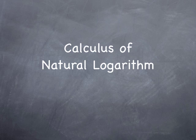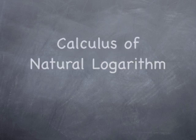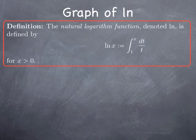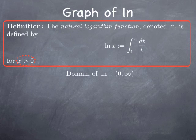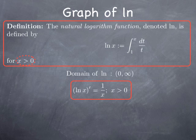Now we're going to turn to the calculus of natural logarithms, starting with the graph of the function. From the definition, it's defined only for positive x, so the domain is the positive reals, 0 to infinity. Applying the fundamental theorem of calculus, the derivative of the function is 1 over x for x positive, which is positive. So the natural log function is increasing on its domain.